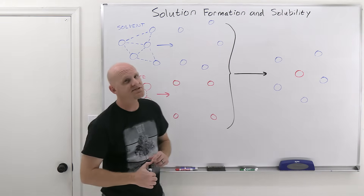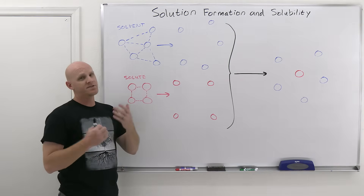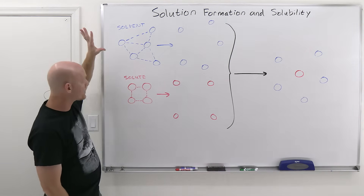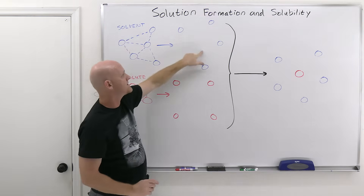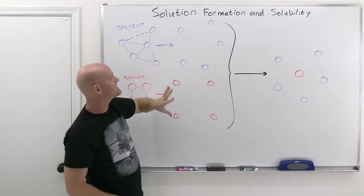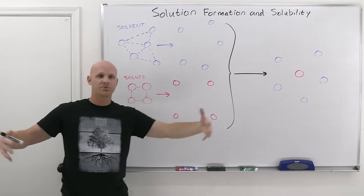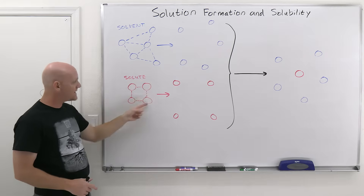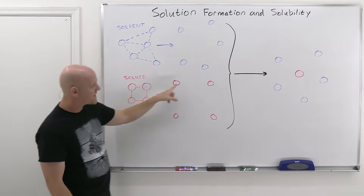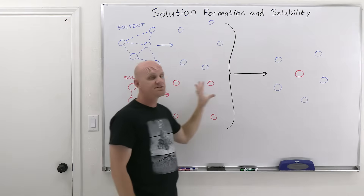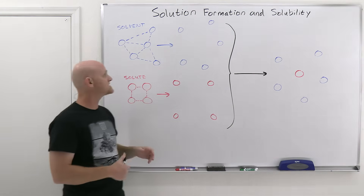We'll start by taking a look at the three-step process for solution formation. Simply put, you've got to break apart and separate out the solvent molecules so that you've got space in between to fit some solute particles. If the solute is going to be all spread out throughout the solvent, then you've got to break apart any intermolecular forces in the solute as well. They've got to be broken apart, and then they're going to mix together. Let's look at the energetics involved in this process.